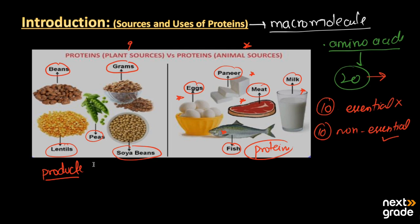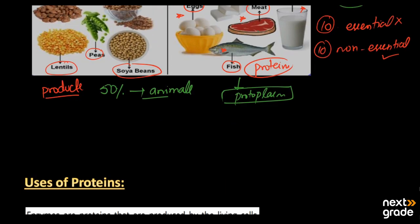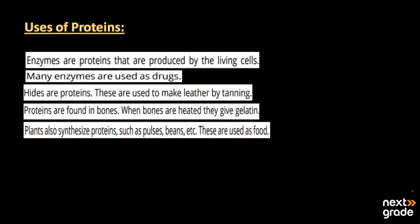Proteins make up almost 50% of the dry weight of animals, and each protein has its own source and carries out a specific function in our body. Proteins such as meat may be of three types: mutton, fish, and eggs — they are used as food by human beings, as they are essential for the formation of the protoplasm, which is known as the unit of the cell.